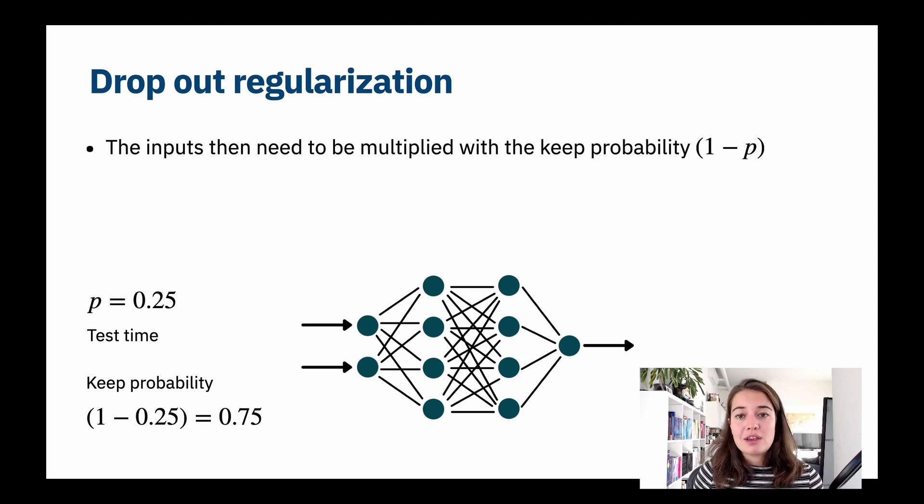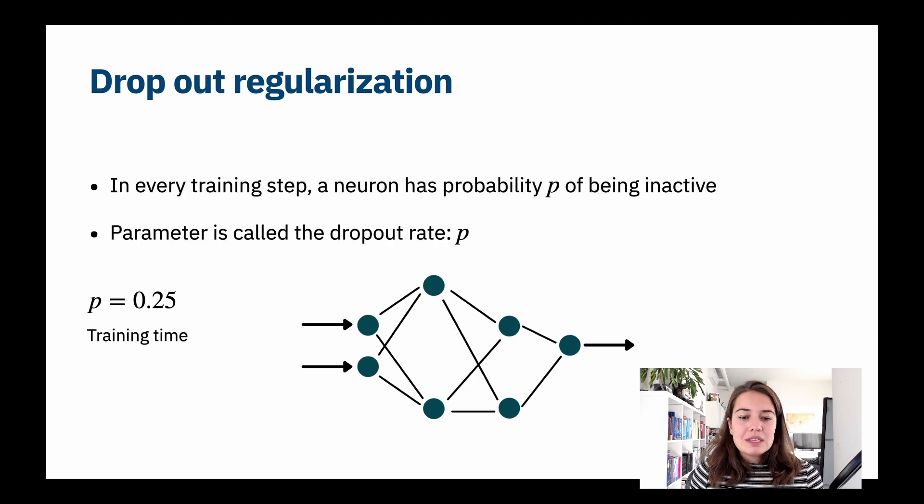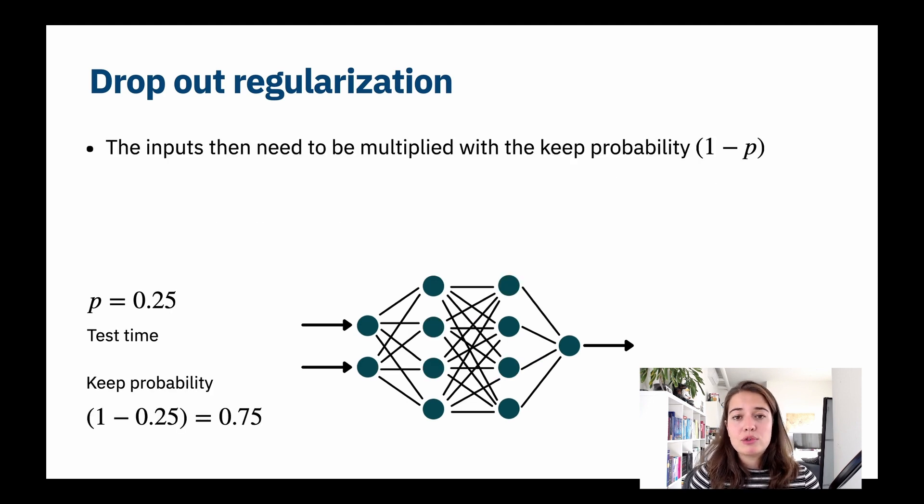This was the training time. In the training time we are missing some neurons, they might be inactive, but in the test time of course we want all the neurons to be there. So there is a little trick here. We have another thing with dropout regularization called keep probability, and that's just 1 minus the dropout rate.